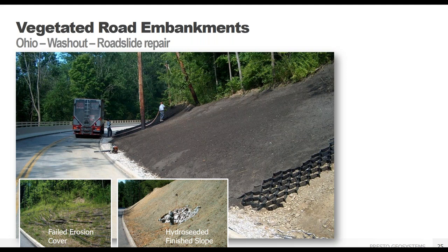This slope along a road in Ohio shows a common problem solved with the GeoWeb system. Erosion and washout of soil slopes onto road surfaces is a problem in many locations. Covering the slope with the GeoWeb system and filling it with topsoil allows for a vegetated slope without the concern of having to constantly replace the soil after storm events. We recommend some surface protection such as hydro seeding or erosion control blankets over the GeoWeb panels until vegetation has had a chance to grow.